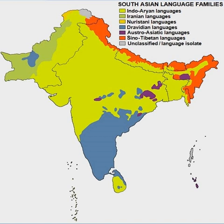The languages of India are divided into various language families, of which the Indo-Iranian and the Dravidian languages are the most widely spoken. There are also many languages belonging to unrelated language families such as Sino-Tibetan, spoken by smaller groups. Linguistic records begin with the appearance of the Brahmi script from about the 3rd century BCE.